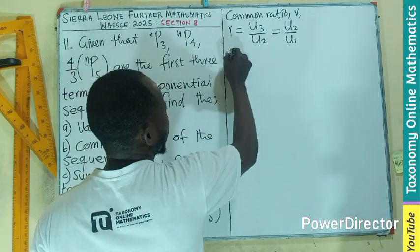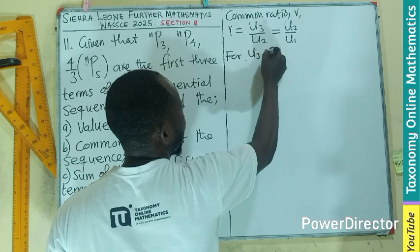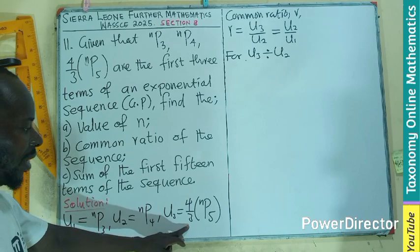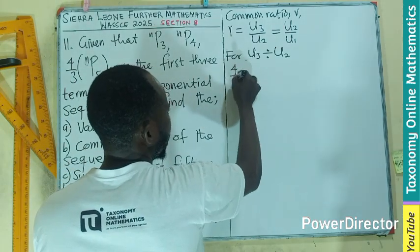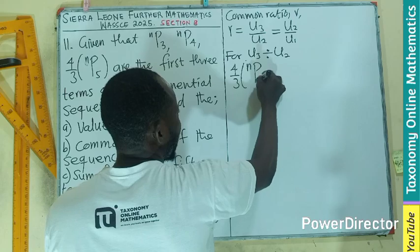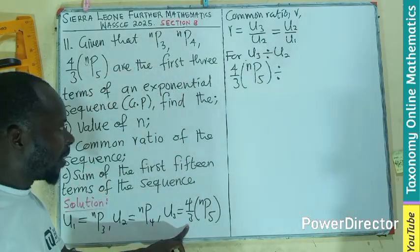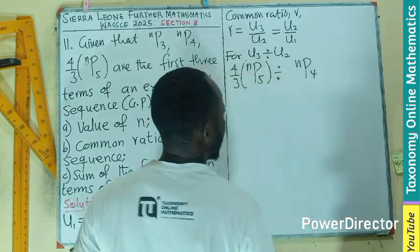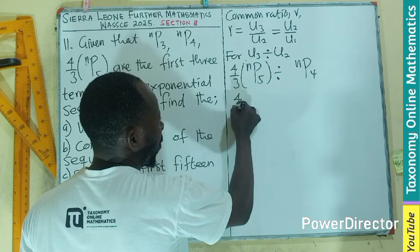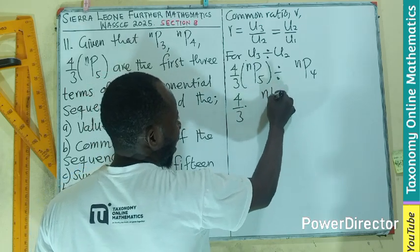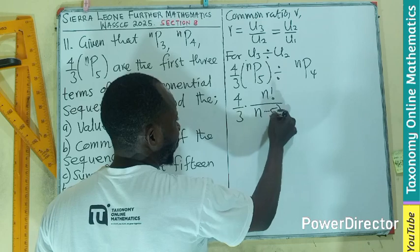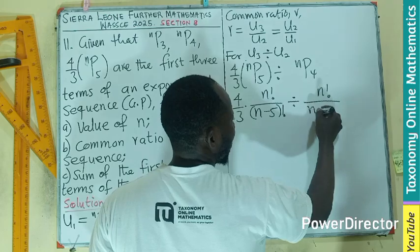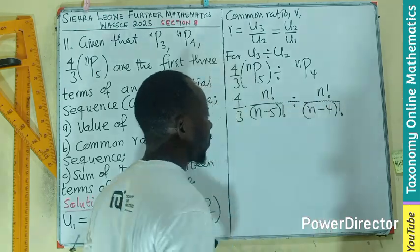For U3, let me buy space here. If I'm to find this, my third term will be 4 on 3 n permutation 5 divided by the second term, which will be n permutation 4. Let's expand that. This will be 4 on 3 multiplying n factorial over n minus 5 all factorial, divided by n factorial over n minus 4 all factorial.